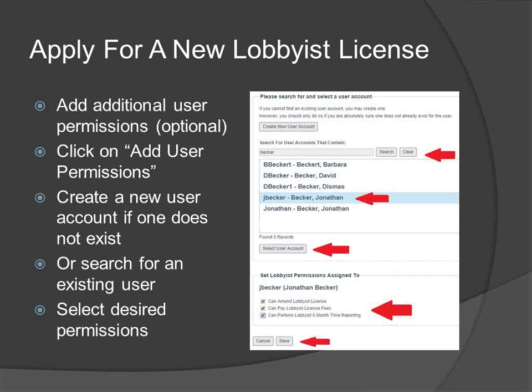You also have the option to add additional user permissions to your account as a licensed lobbyist. This feature allows you to grant someone else, such as an administrative assistant, the ability to amend your license, pay lobbying fees on your behalf, and or complete your lobbyist time report. If the person you wish to delegate permissions to already has a user account, enter part or all of the person's last name into the search field and click the Search button. Review the search results for potential matches. If you can confirm that the name listed is the correct person, click on Select User Account. Next, select which permissions you wish to grant this person for your account. Finally, click Save.